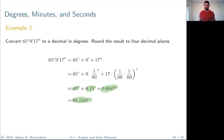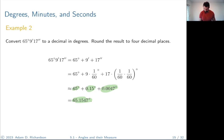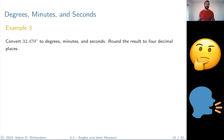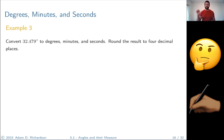If that seemed confusing, don't worry — you'll get practice on the homework and can always review these lectures. Now let's go the other way: starting with 32.479 degrees and converting it into degrees, minutes, and seconds. Think about how you would approach the problem, say something out loud about it, then try the calculation yourself.